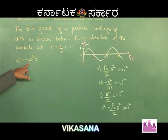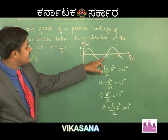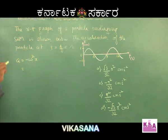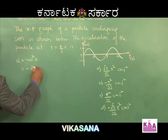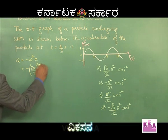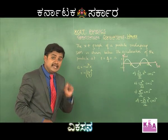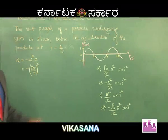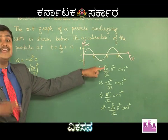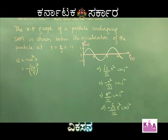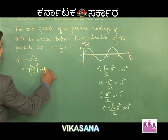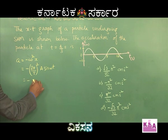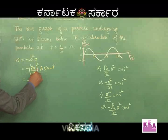Omega = 2pi/T. From the graph, the time period T = 8 seconds. So omega = 2pi/8. The acceleration is minus (2pi/T) squared times X, where X = A sin(omega t). Looking at the graph, it is a sine graph, so X = A sin(omega t). Substituting: acceleration = minus (4pi squared / 64) times A sin(omega t). That gives minus pi squared by 16, times A sin(omega t).